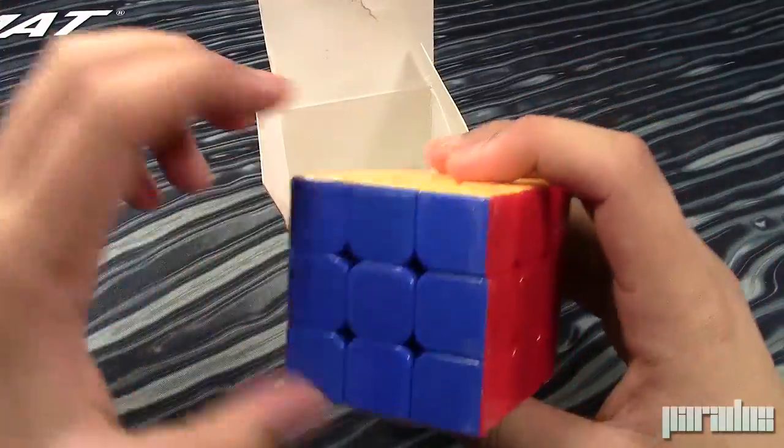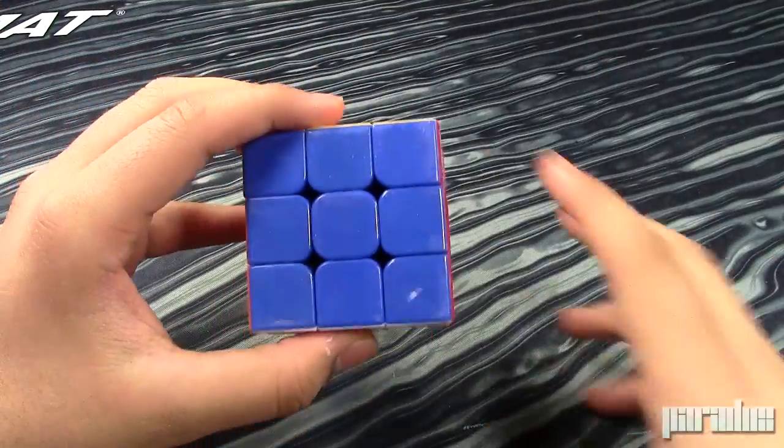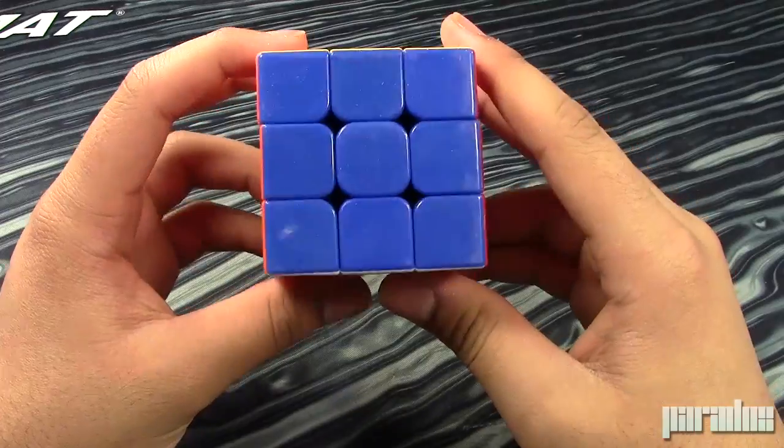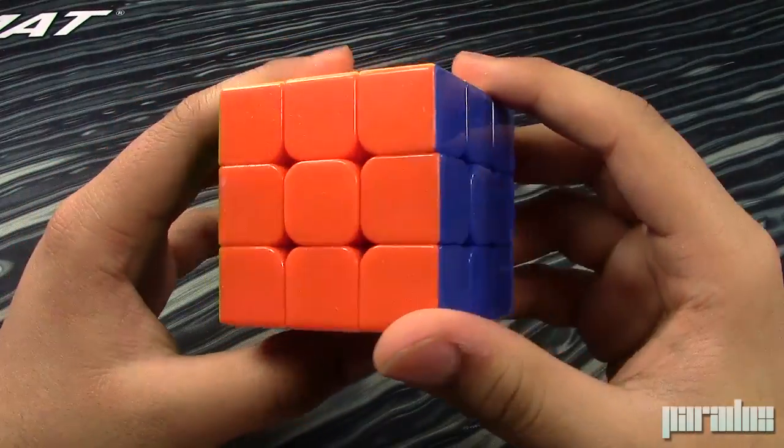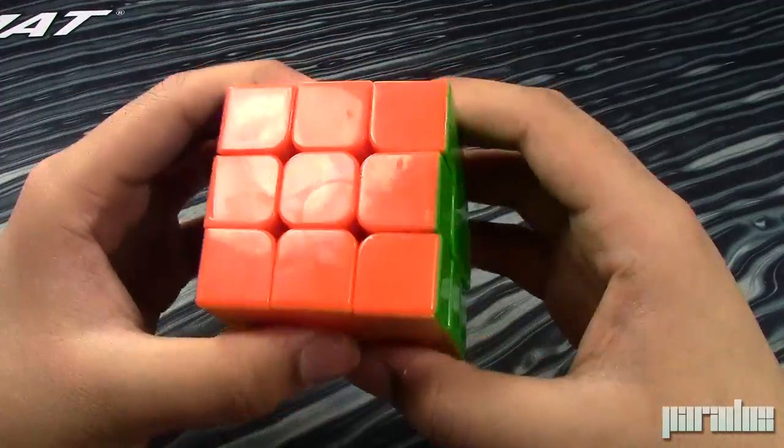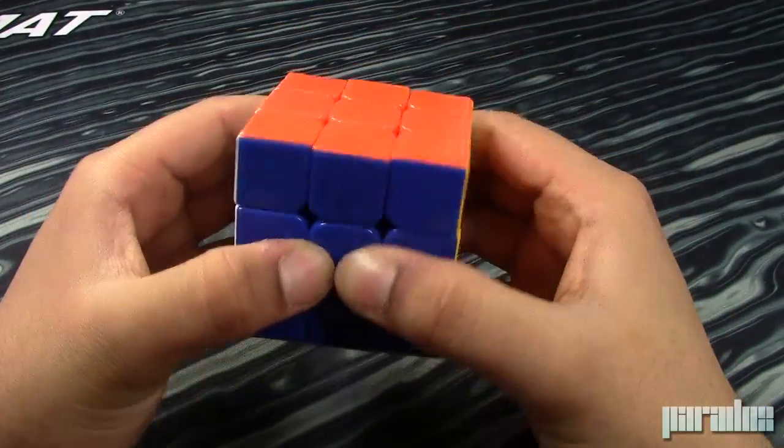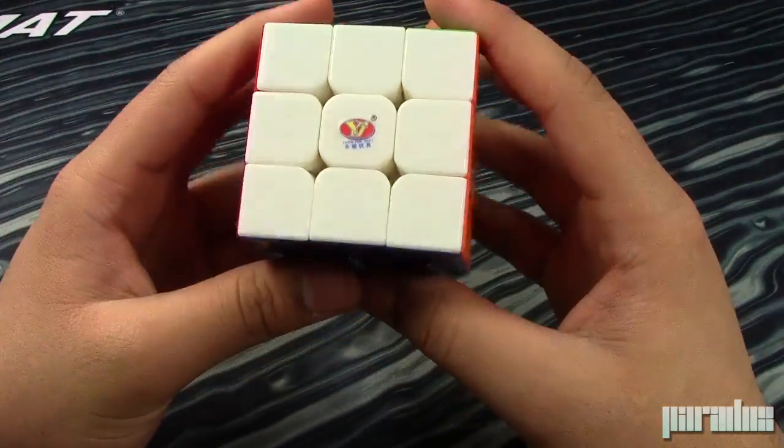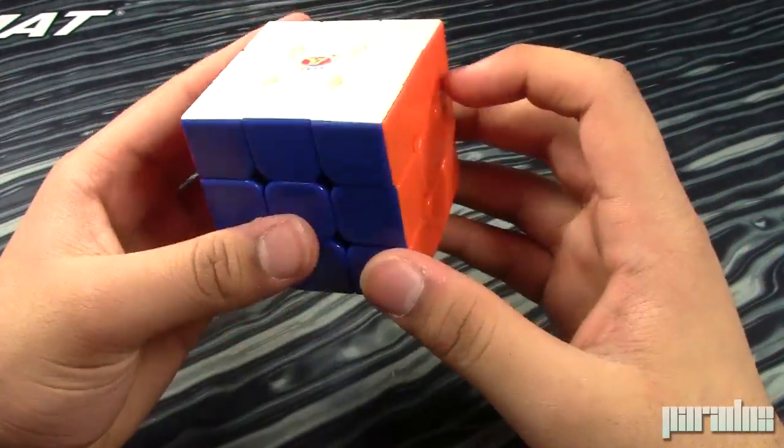And here we have the cube, the YJ YuLong, and it's very dusty, obviously. It looks very rounded and bubbly, and the center caps aren't put in all the way. Just had to pop the center caps in. So let's get on to first turns.